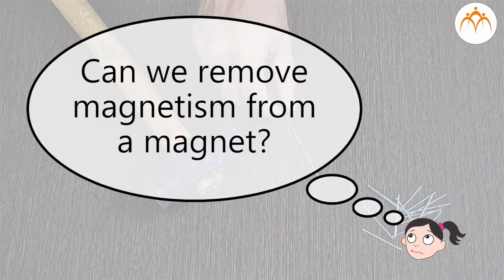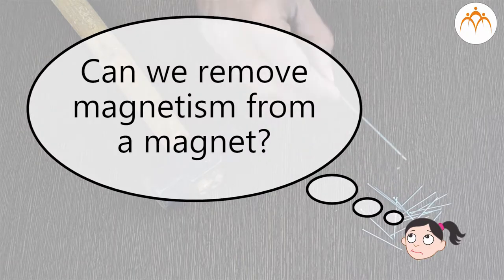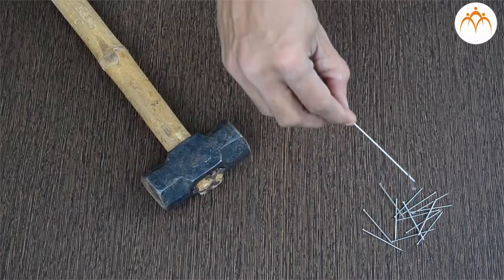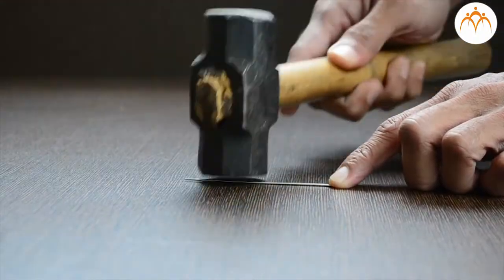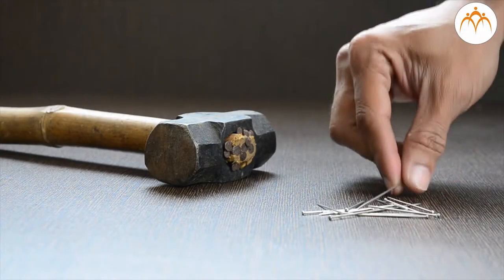Can we see magnetism from the magnet? Yes. If we heat it or if we hammer it for a long time, materials lose their magnetic property.